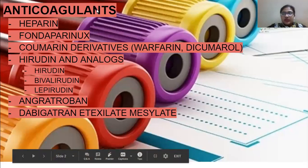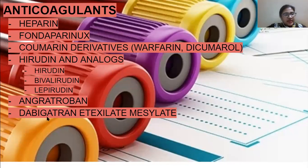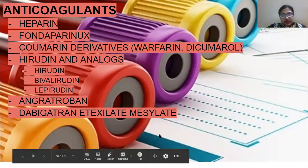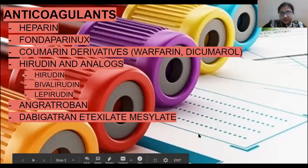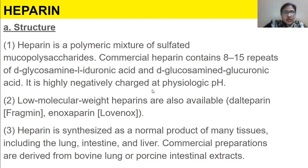The major classes of anticoagulants include heparin, fondaparinex, then we have coumarin derivatives which we also studied last semester, then we have hirudin and analogues, argatroban, and then we have dabigatran etexilate mesylate. So these are all the major anticoagulant classes.